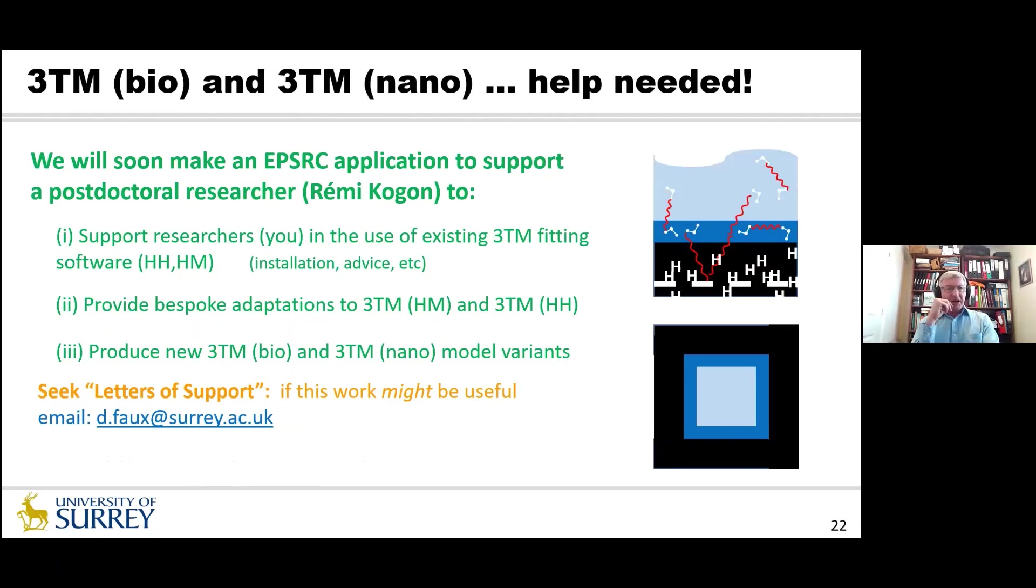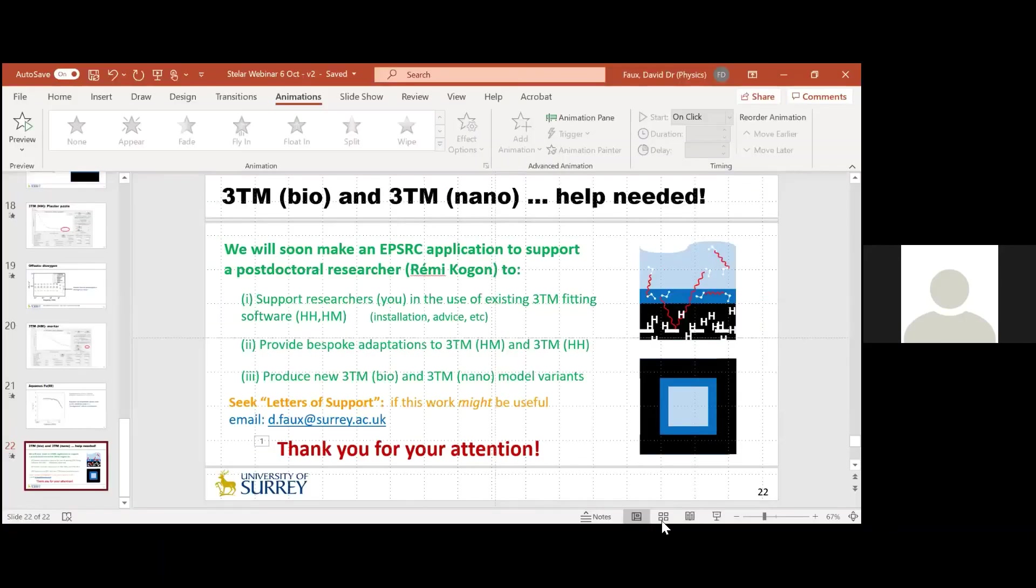I want to just finish here again by just reminding you that if we are going to be able to expand the scope of this model to the bio and nano areas, if we're going to be able to provide bespoke adaptations and to get you using the software and to help you out, we're going to need grant support. And to achieve that, we are going to need letters of support. Remy is doing this unpaid at the moment and we need to get him paid. So I'd be grateful if you felt so inclined to just drop an email, just put letters of support in the subject line and help us out. Thank you very much. OK, are there any questions?